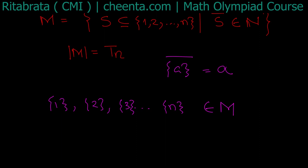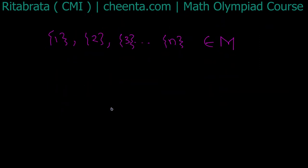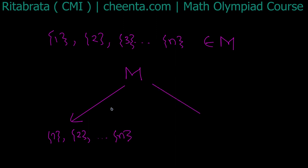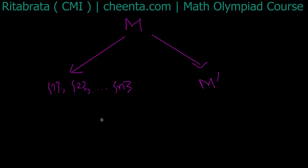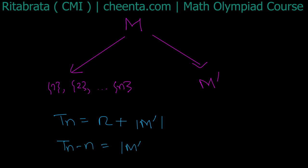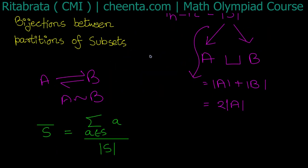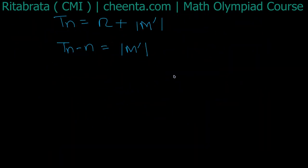One obvious thing: all singleton sets {1}, {2}, ..., {n} trivially satisfy the property, since each singleton has integer average. These all lie inside M, and they are the only singleton sets in M. So all other sets in M have at least two elements. First I partition M into two parts: the singletons (there are n of them) and the rest, which we call M'. So T(n) equals n plus size of M', meaning T(n) minus n equals size of M'.